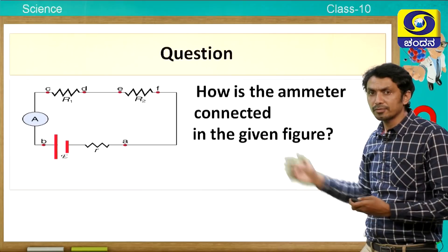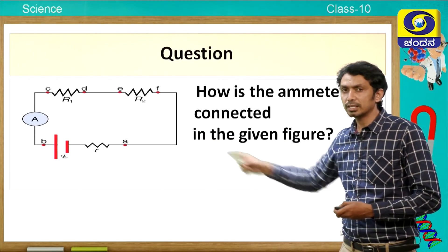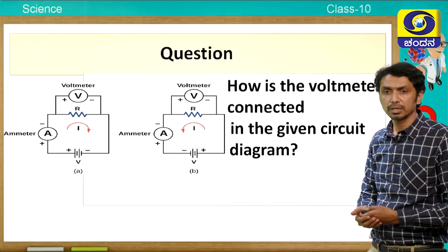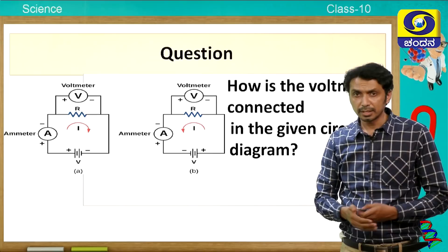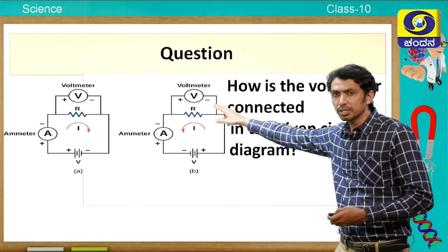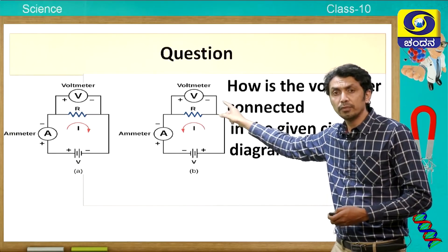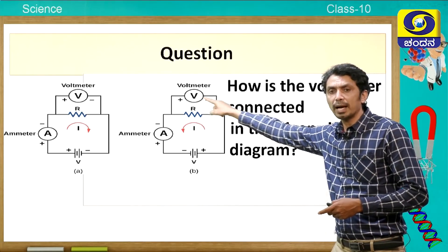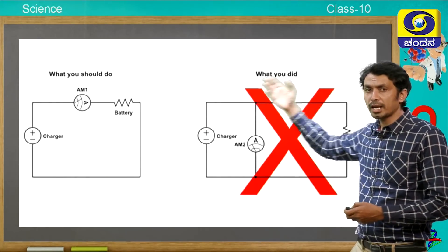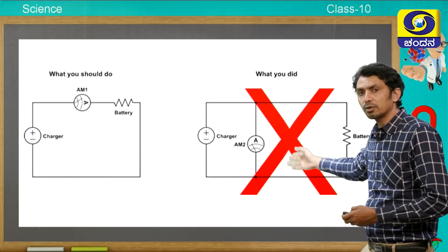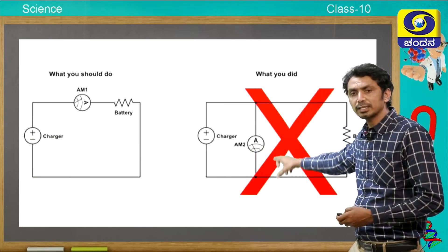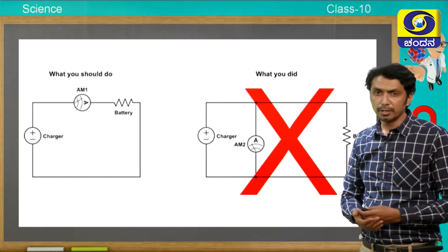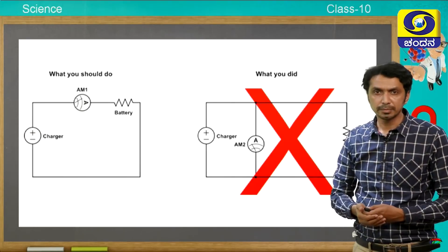Here is the next question: in this diagram, how is the voltmeter connected in the circuit? It is connected in parallel, because we measure the potential difference at the two ends where we want to measure the difference of charges - that is why we connect it in a parallel connection. Here you can see the right and wrong way to connect the ammeter. The wrong way is connecting the ammeter across the battery rather than in series with the battery, which is the proper way.